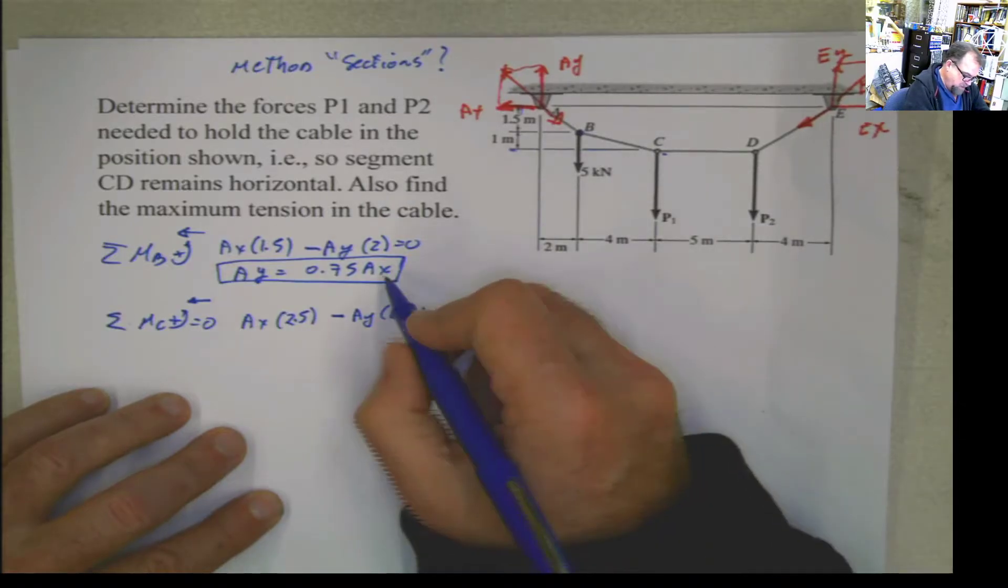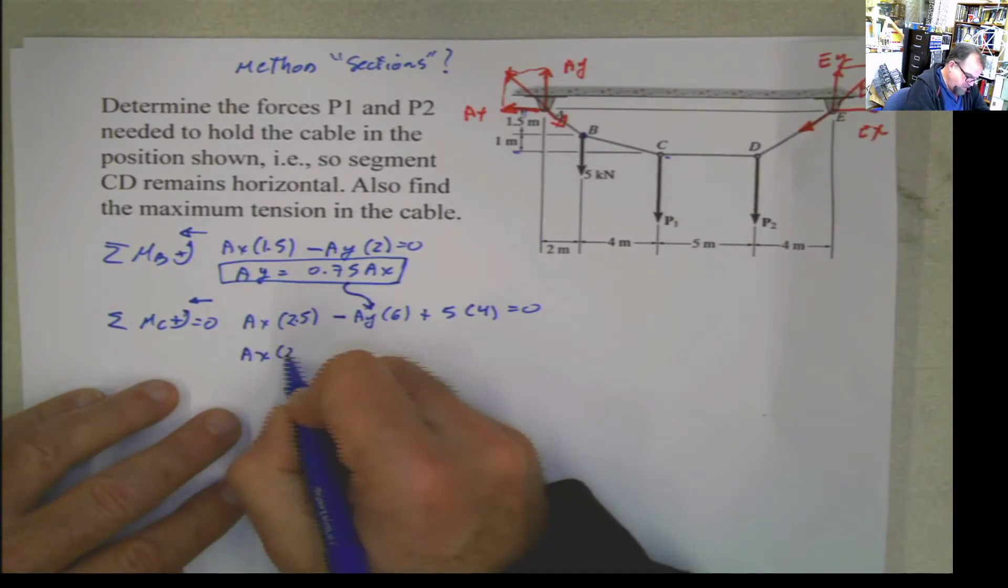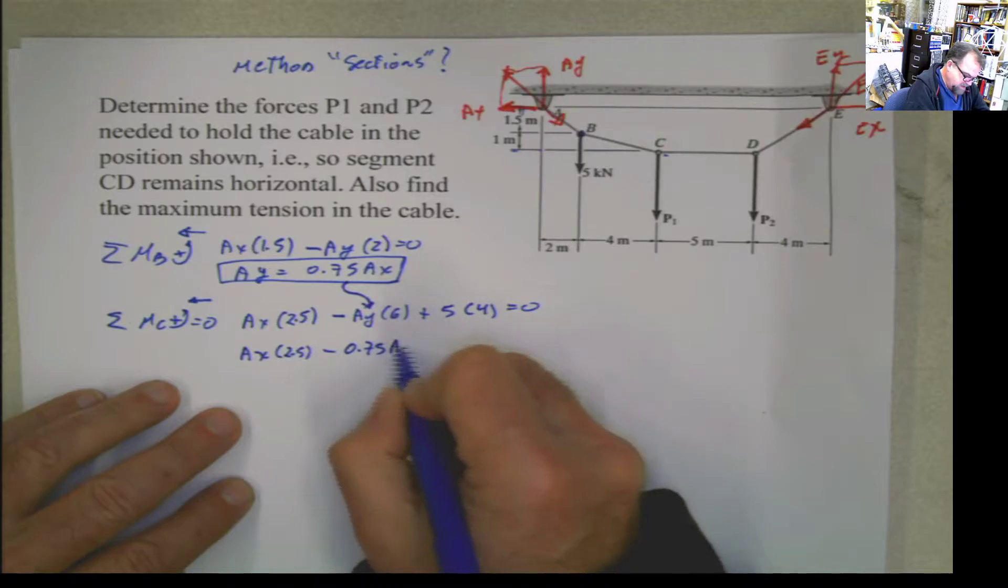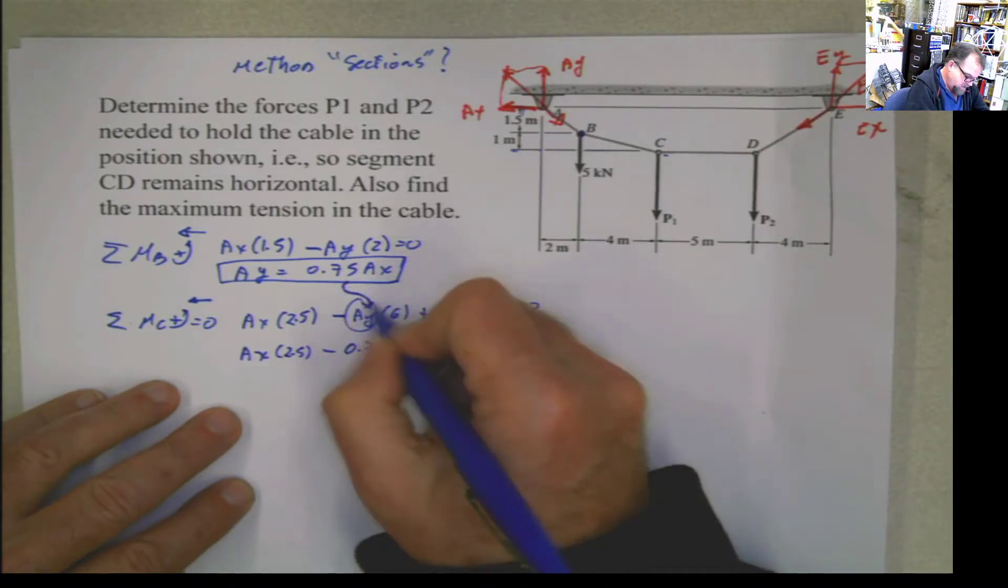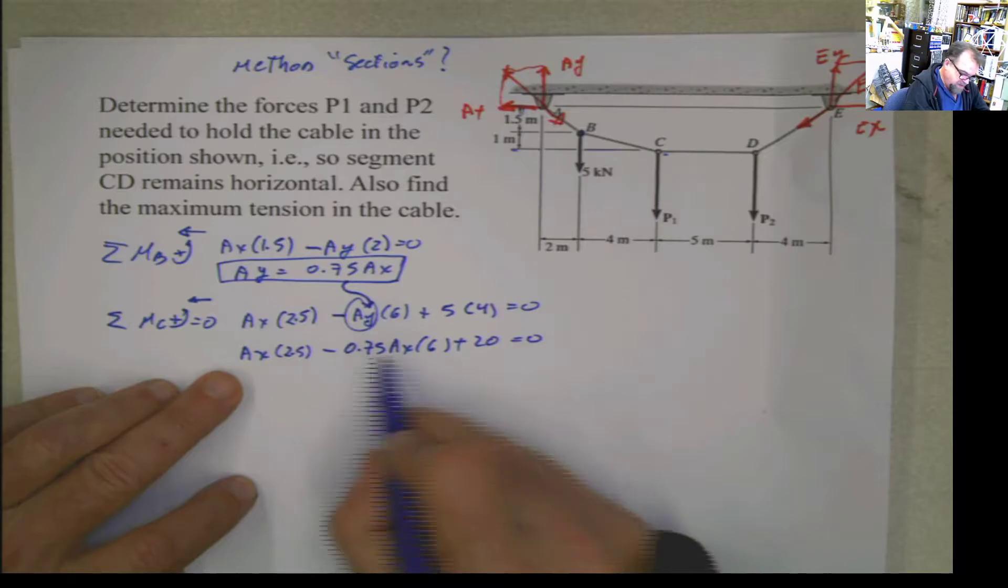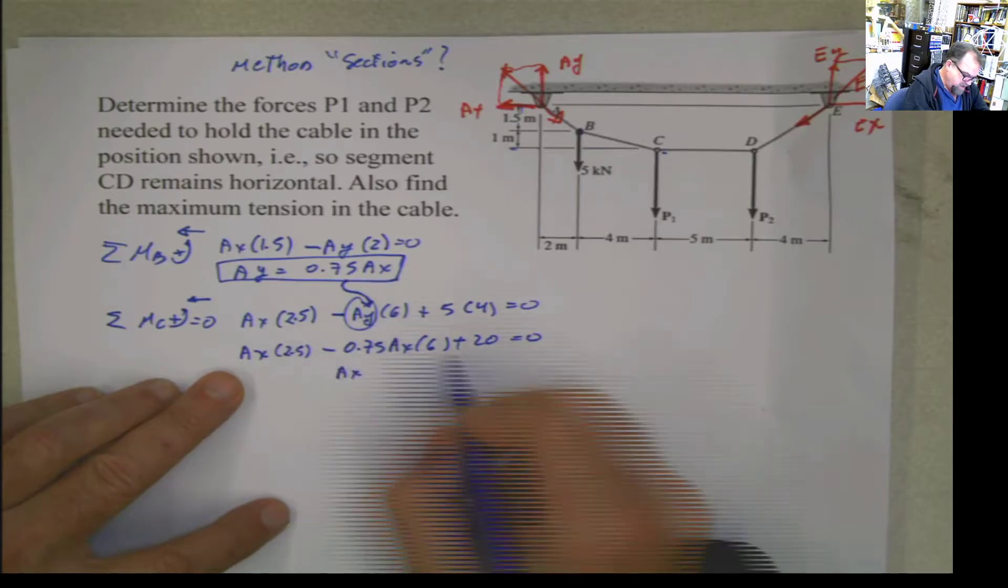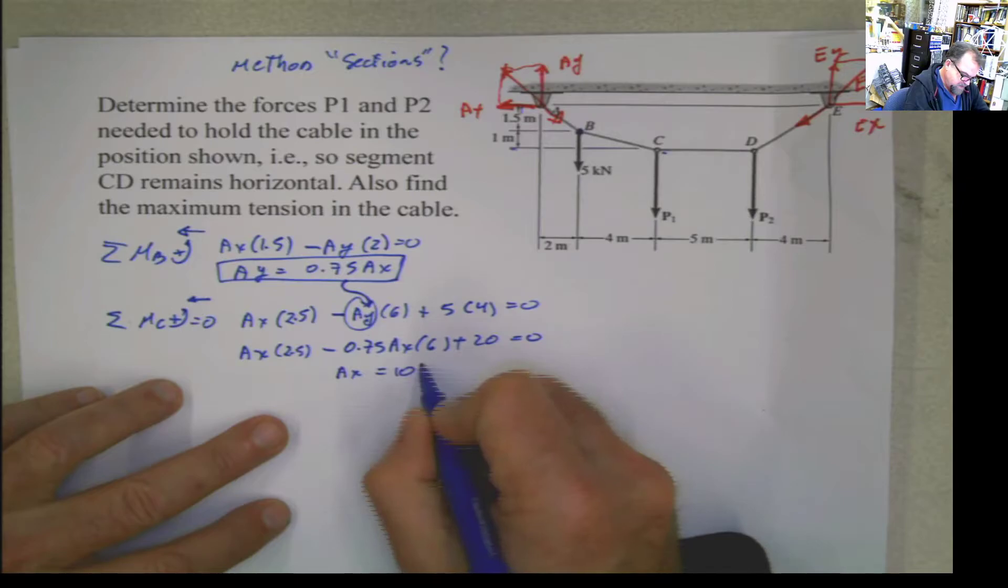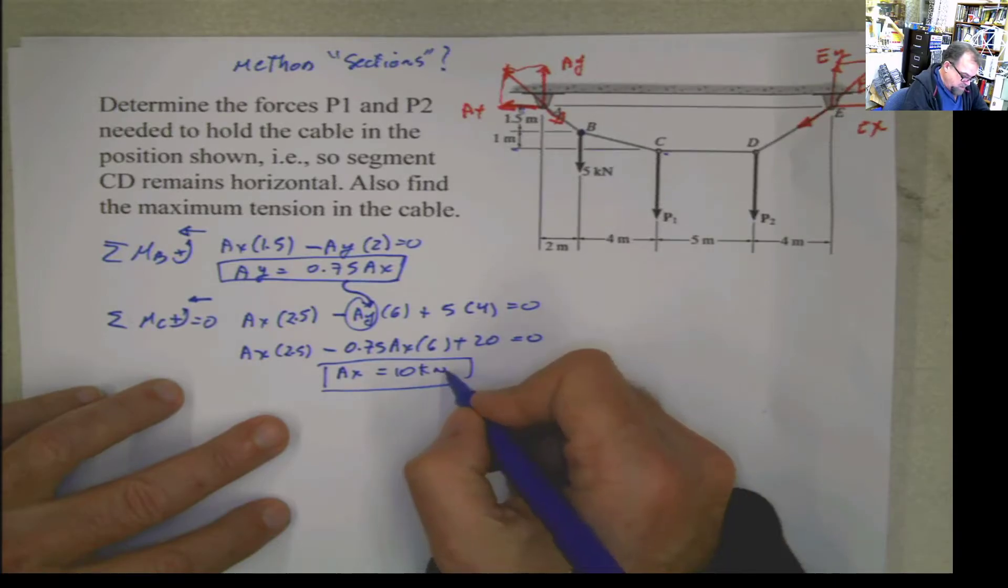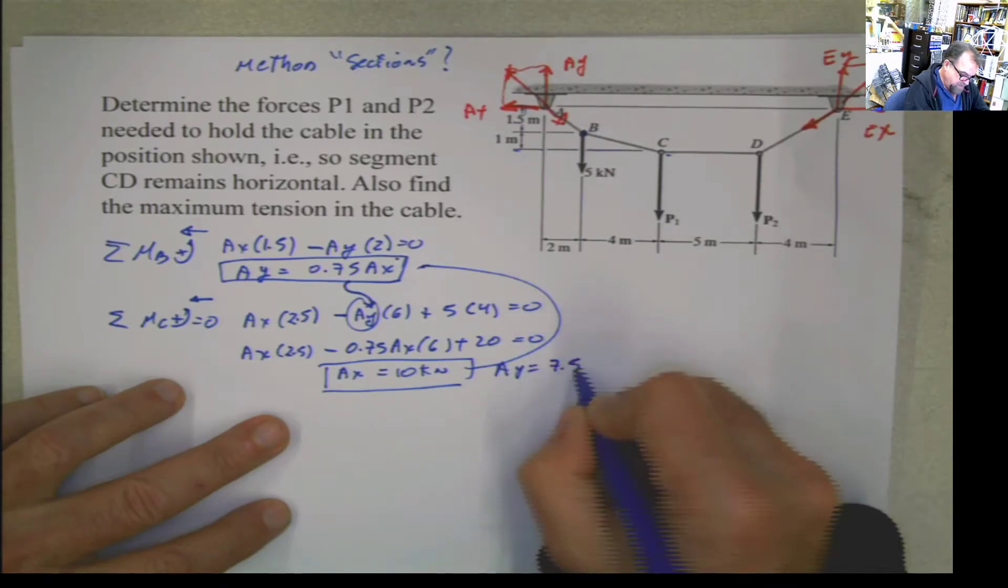I can plug this into here. AX multiplied by 2.5, minus AY, but AY is 0.75 AX, multiplied by 6, plus 20 equals 0. Then I can solve. This is going to be 2.5, and this is going to be 4.5. So I can solve for AX. 2.5 minus 4.5 is 2, 20 divided by 2 is 10. I calculated AX. I can plug this into here and get AY equals 7.5 kilonewtons.